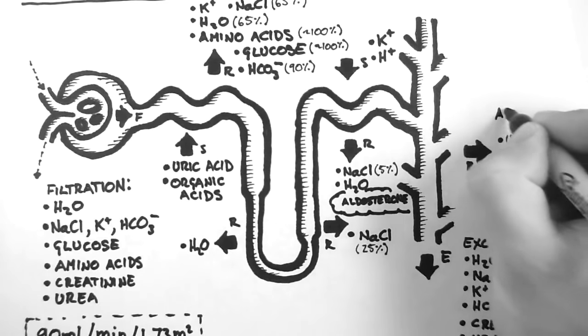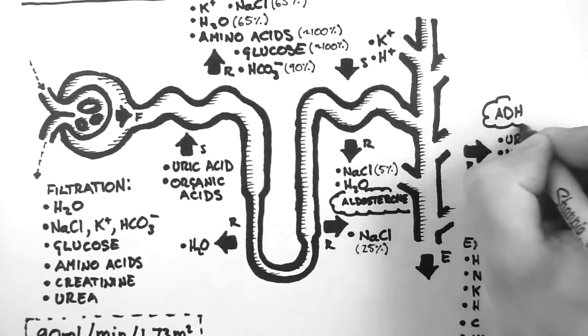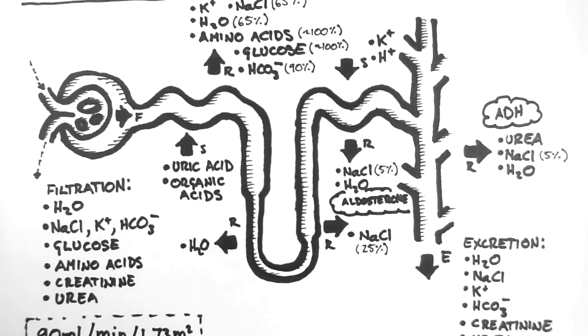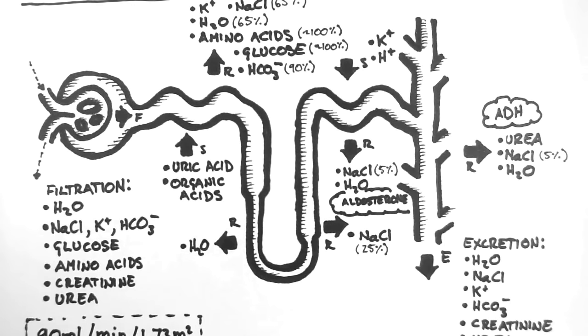The other is anti-diuretic hormone, also known as vasopressin, which is released from the posterior pituitary. And this causes more water to be reabsorbed by the collecting ducts. Both these hormones act when the body is in a state of under-hydration and needs to retain water.